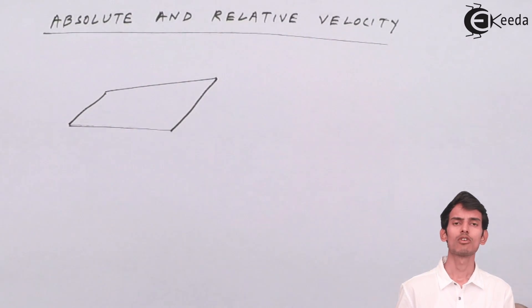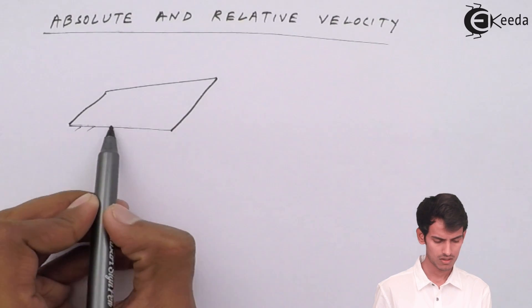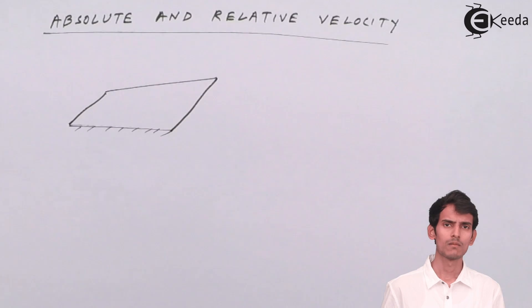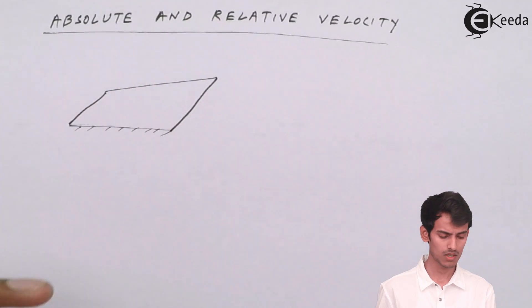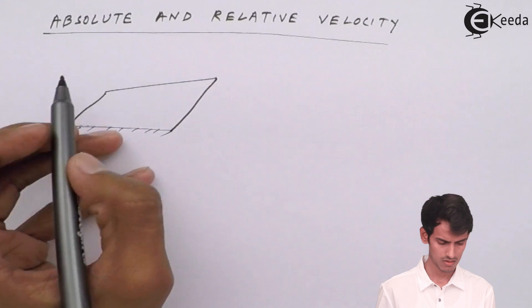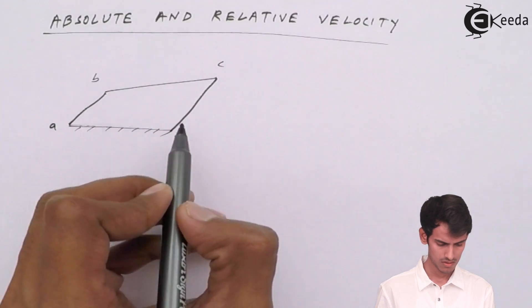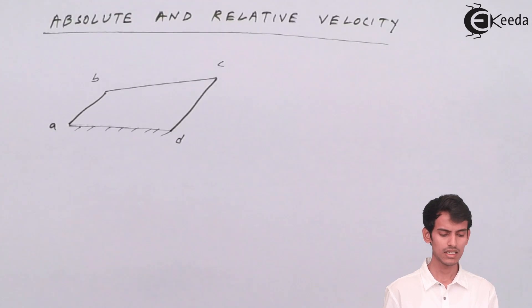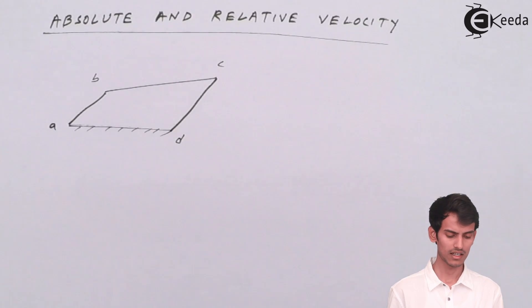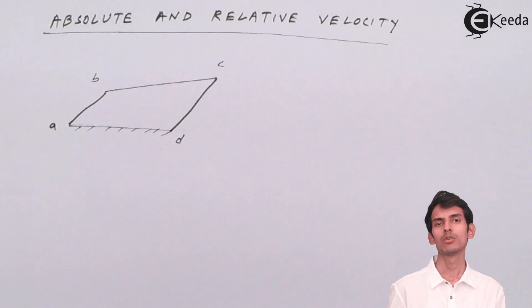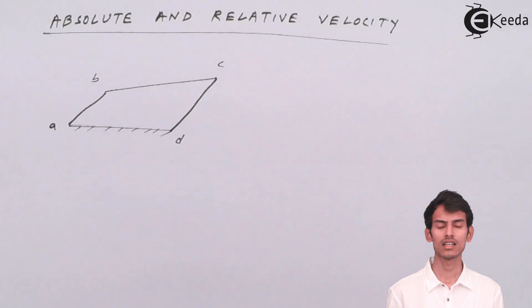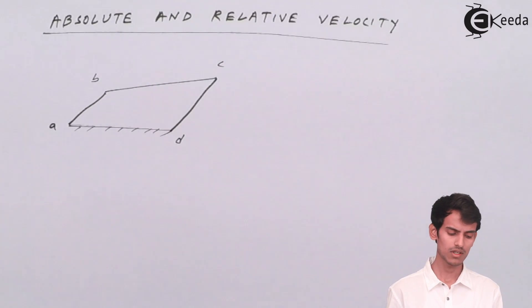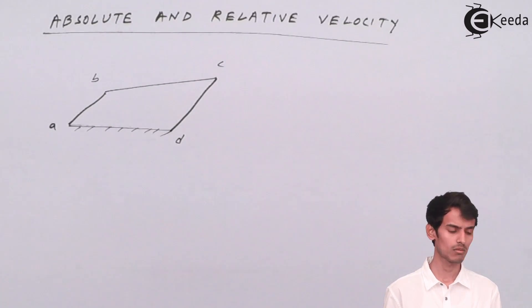I've drawn a 4-bar chain; the bottom link is fixed. The links are AB, BC, CD, and AD. These are the four links and link AD is fixed. The input is given to the crank — the shortest link is considered as crank. So let's assume that AB is the crank and motion is given to link AB.